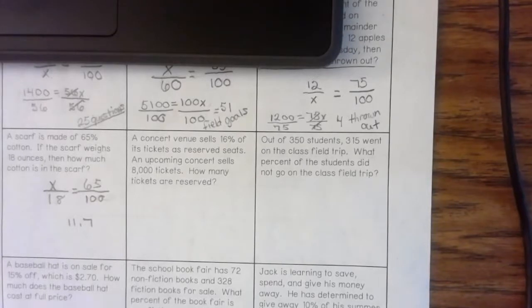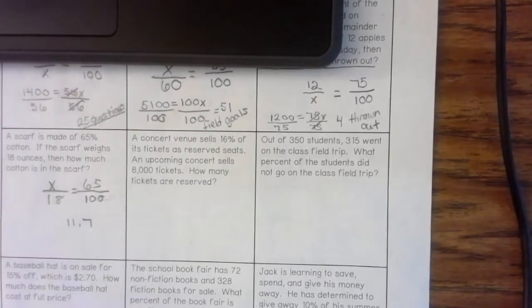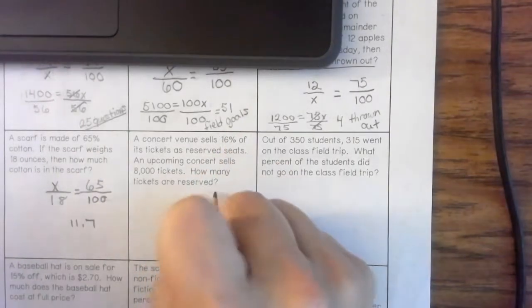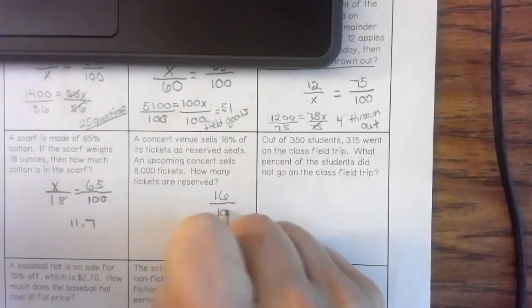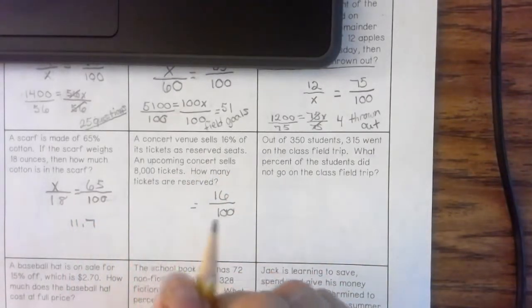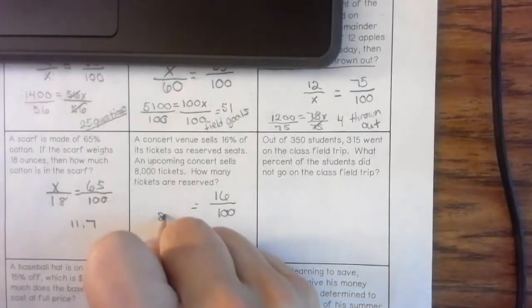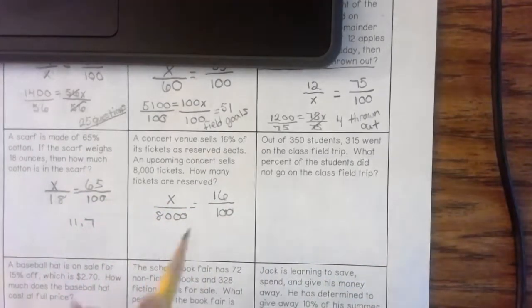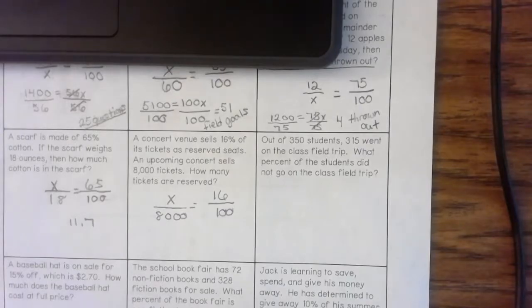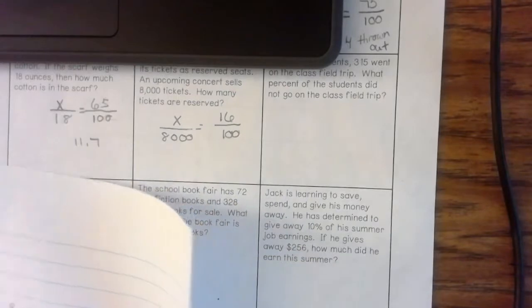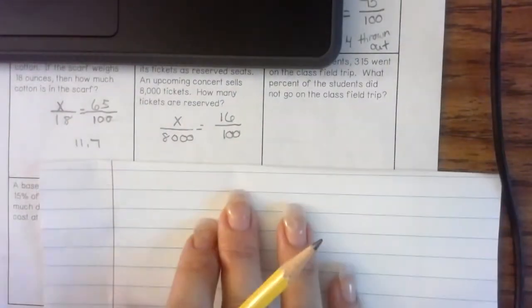A concert venue sells 16% of its tickets as reserved seats. An upcoming concert sells 8,000 tickets. How many tickets are reserved? So, we know 16% out of 100, right? We know that they sold 8,000 tickets total. That was their total amount that they sold. What we don't know is that 16%. We do not know the part that was held.